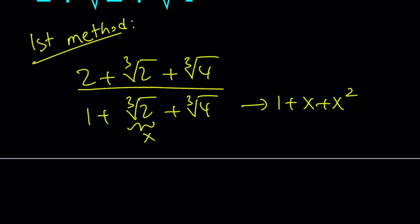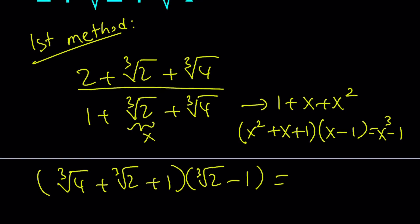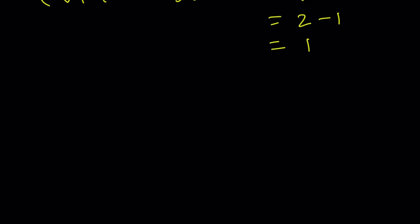So this tells me, hey, x squared plus x plus 1, if you want to rationalize it, I can multiply it by its conjugate, which is x minus 1. And guess what? This is difference of 2 cubes. So if I multiply cube root of 4 plus cube root of 2 plus 1 by cube root of 2 minus 1, I get cube root of 2 cubed minus 1, which is 2 minus 1, which is 1. We got 1 by multiplication. In other words, they're reciprocals. Let's go ahead and do that.